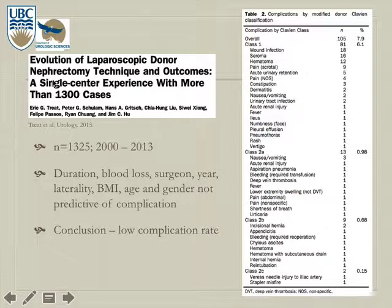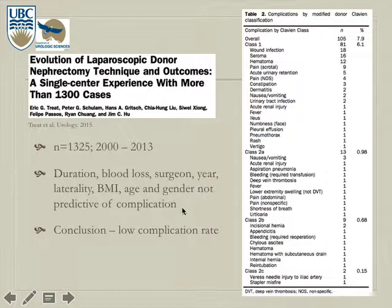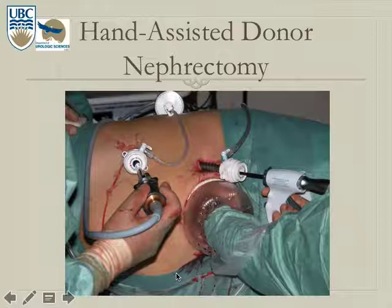A UCLA study of 1,325 laparoscopic donor nephrectomy cases from 2000 to 2013 evaluated complications over 13 years, changing practice after each complication in an M&M-style review. The overall complication rate was very low at 7.9%, with 6.1% being Clavien Class 1. Operative duration, blood loss, surgeon, year of procedure, side of operation, and patient gender were not predictive of complications, suggesting complications sometimes just happen. Overall, satisfaction with the procedure was very high.